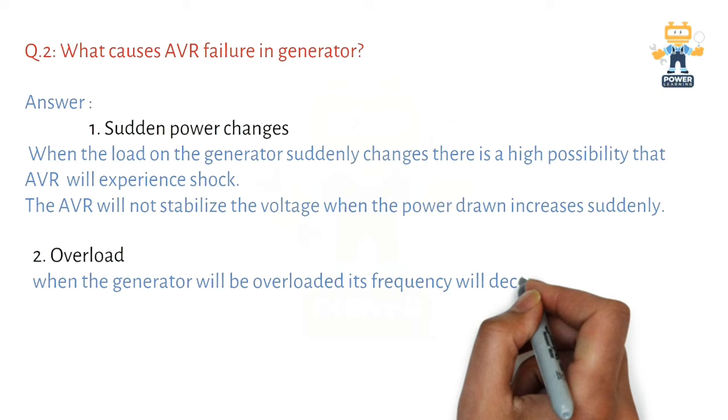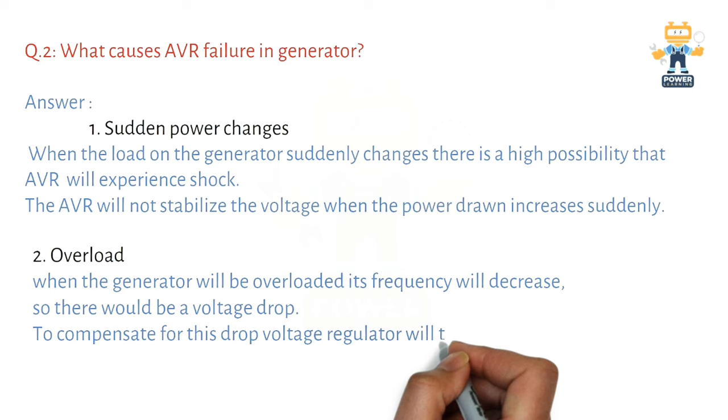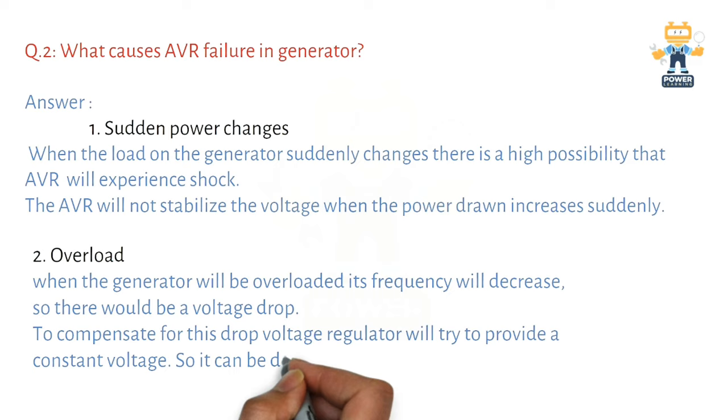Cause number two: Overload. When the generator is overloaded, its frequency will decrease, so there would be a voltage drop. To compensate for this drop, the voltage regulator will try to provide constant voltage, so it can be damaged. Avoid overloading.